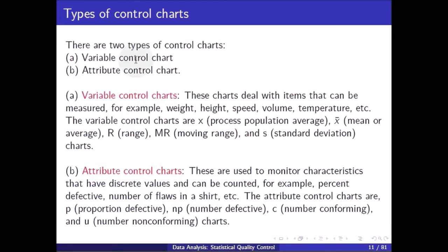There are two types of control charts: variable control charts and attribute control charts. Variable control charts deal with items that can be measured, for example weight, height, speed, volume, and temperature; these include the x-bar, R, MR, and S charts. Attribute control charts are used to monitor characteristics that have discrete values and can be counted, for example percent defective or number of flaws in a shirt; these include the p, np, c, and u charts.